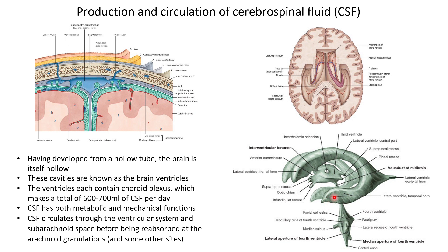The majority of CSF is made in the lateral ventricles and drains down to the interventricular foramen — the point at which the two lateral ventricles converge and drain into the third ventricle. In three dimensions we would appreciate that the third ventricle is laterally flattened, squashed between the thalamus on the left and right. The third ventricle receives CSF from the lateral ventricles via the interventricular foramen and drains it down through the narrow passageway known as the cerebral aqueduct, or aqueduct of Sylvius.